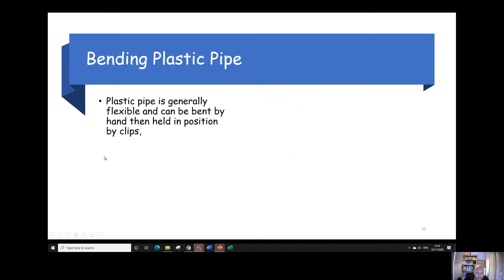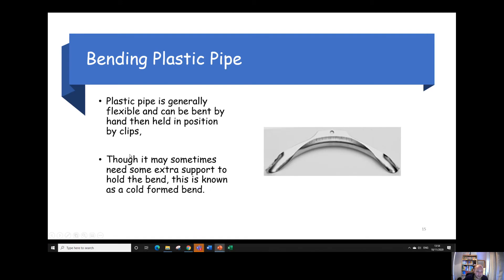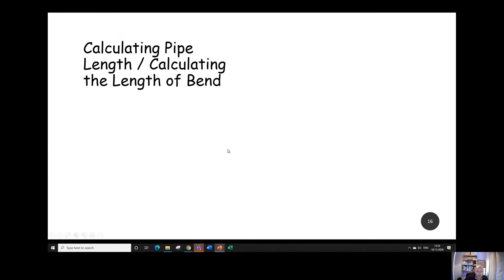Bending plastic pipes, it's pretty straightforward. Normally plastic pipes would just bend with their hands and be held in position with clips. Sometimes you might use a cold formed bend. For example, if it needs a fairly sharp bend and it needs to be supported on a washing machine or dishwasher, for example.